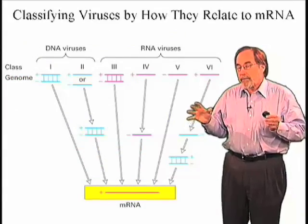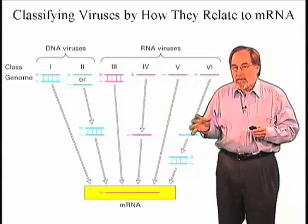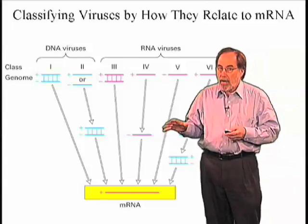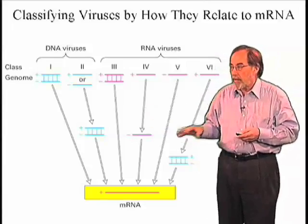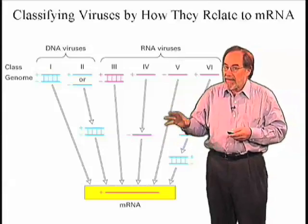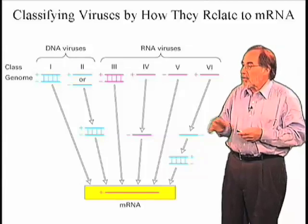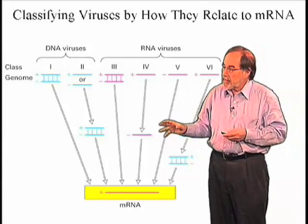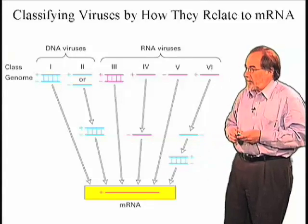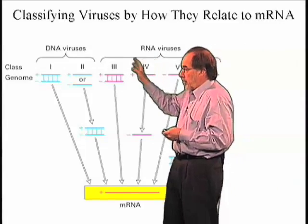Since proteins are the workhorses of any biological system, the messenger RNAs that encode proteins are the most important endpoint of a molecular system that allows for controlling cell behavior. And so we can classify viruses by how they make their messenger RNA. In particular, there are DNA viruses and RNA viruses.